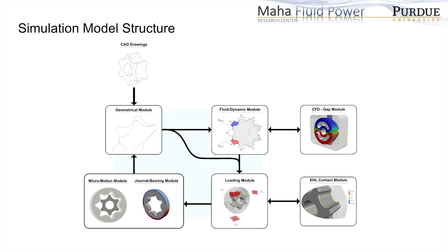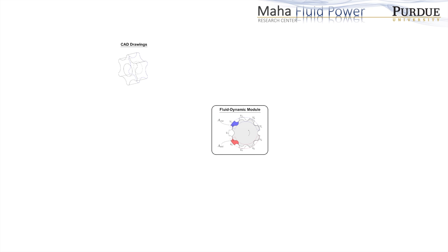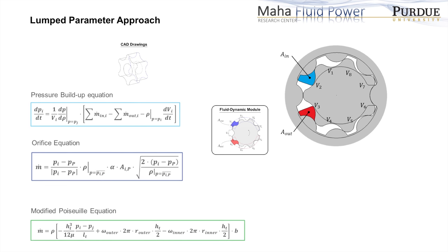In this figure, we can see the structure of the simulation model developed at Maha Fluid Power Research Center. The model is a multi-domain simulation tool comprising different submodules. The core of the simulation model is represented by the fluid dynamic module, which describes the main flow through the units and is based on a lumped parameter approach.